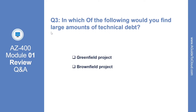Question number 3: in which of the following would you find a large amount of technical debt? The right answer is brownfield project. A brownfield project comes with the baggage of existing code bases, existing teams, and often a great amount of technical debt. They can still be ideal projects for DevOps transformations.